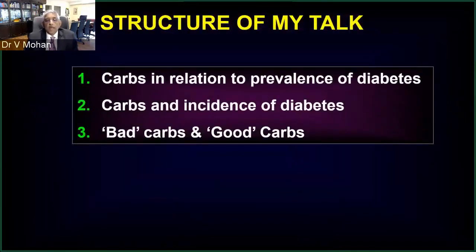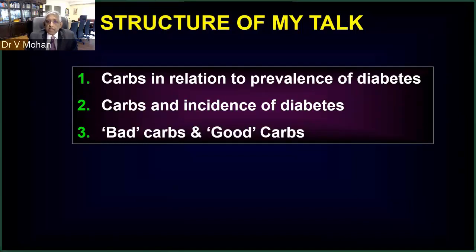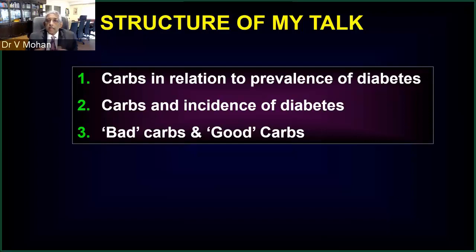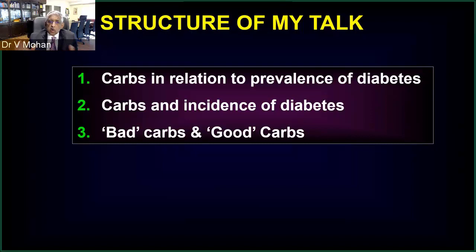This will be the structure of my talk. I have no conflict of interest to declare. All studies I am presenting are funded by government organizations, not by any pharma. I'll first talk about carbs in relation to the prevalence of diabetes — is there a connection between increasing carbohydrate intake and increasing prevalence? Second, I'll talk about carbs and the incidence of diabetes — new onset cases. Finally, I'll end with the last two or three slides on the fact that not all carbs are bad; there are bad carbs and good carbs.